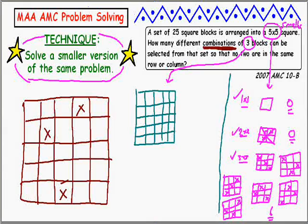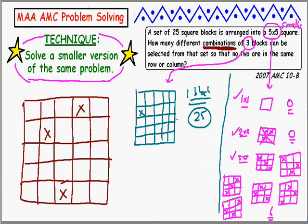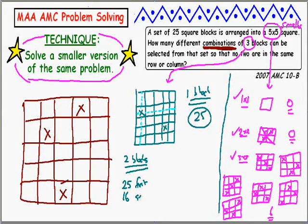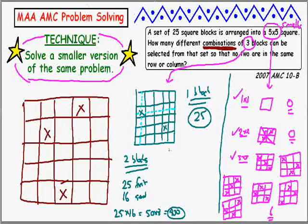I'm just flailing - I have no idea where I'm going, just trying stuff. How many ways can I choose one block? That block can be any of the 25, so there are 25 ways. How about two blocks? I've chosen one, but to choose a second I can't use anything in the same column or the same row. That leaves 16 squares to choose from - 16 options for a second block. So it looks like there are 25 times 16, which by doubling and halving is 50 times 8, giving 400 ways to choose two blocks.